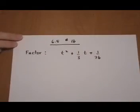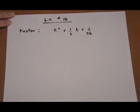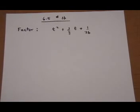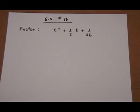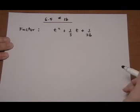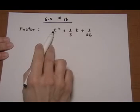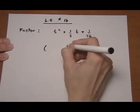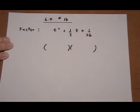6.5, number 16. And this is where you can see that this approach can be handy, because if I look at t squared plus 1 third t plus 1 thirty-sixth, I don't want to try factoring that using the other methods like trial and error or the grouping method. That seems like it would be a bit cumbersome. So I'm going to look and say that's a perfect square and that's a perfect square. So I'm just going to try the perfect square trinomial approach and see if it works.